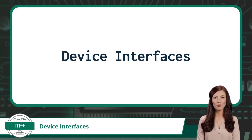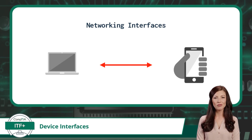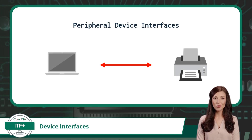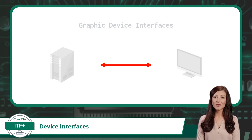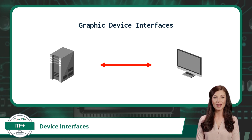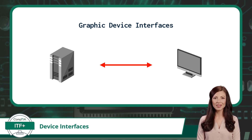For the CompTIA ITF Plus Exam, we will be grouping device interfaces into three categories. The first is networking interfaces, which allow communication from one computing device to another — for example, a connection from a laptop to a smartphone. The second is peripheral device interfaces, which allow communication from a computing device to a peripheral device, such as a laptop to a printer. The third is graphic device interfaces, which transmit visual data for display purposes, such as a desktop PC to a computer monitor.